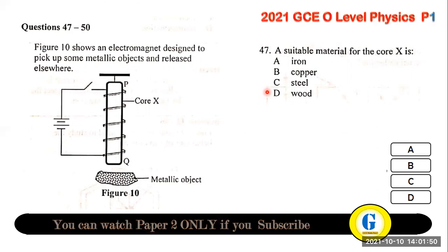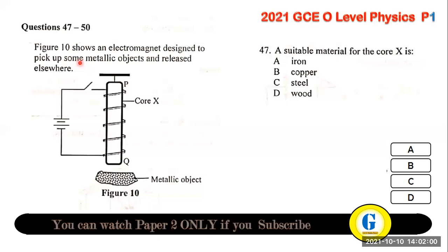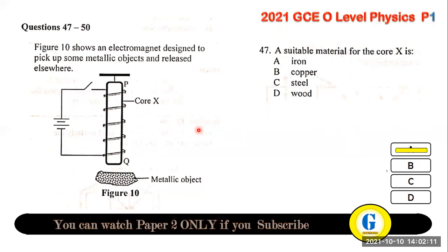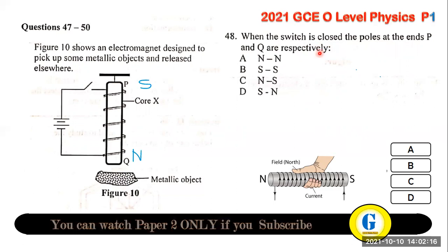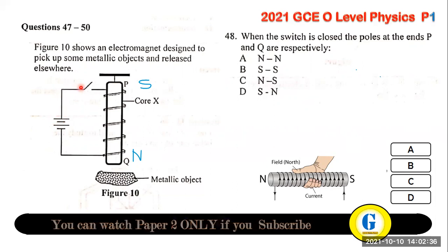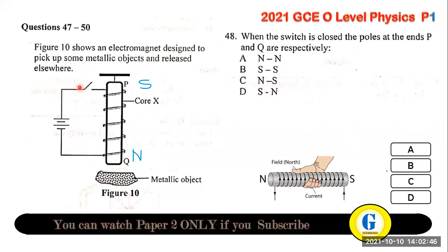Questions 47–50 concern an electromagnet. Question 47: a suitable material for the core is soft iron. Question 48: when the switch is closed, current enters at the end where the longer lines indicate positive. Using the right-hand rule, where current enters is the south pole, so P is south and Q is north — S, N.